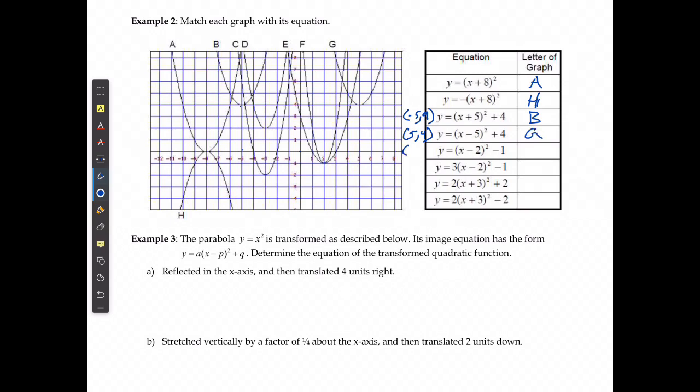Next one has a vertex at 2 and negative 1. There's two possible cases, either it can be E or F. Now in this case I have an a value of 1.